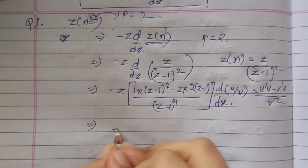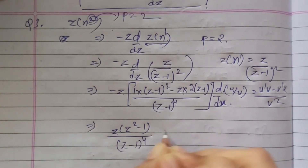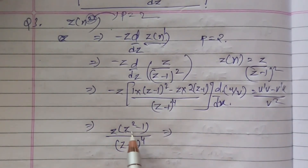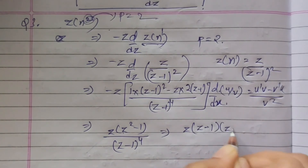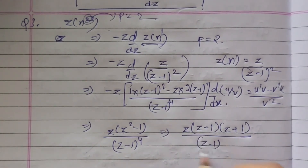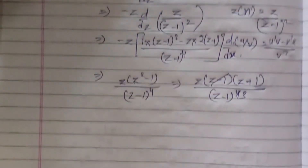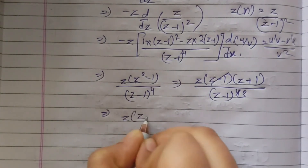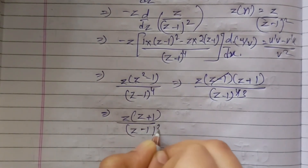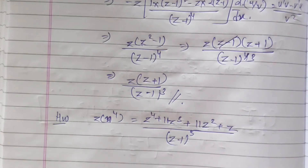Then we have z * (z^2 - 1) / (z-1)^4. Using the difference of squares, a^2 - b^2 = (a+b)(a-b), this becomes z*(z-1)*(z+1) / (z-1)^4, which simplifies to z*(z+1) / (z-1)^3. That is your answer for Z{n^2}.